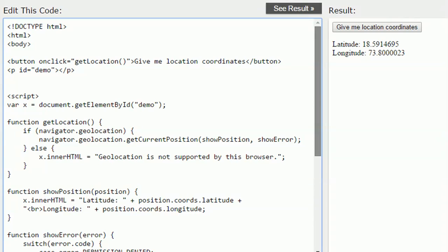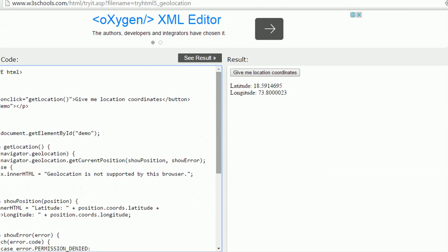Besides getCurrentPosition, HTML5JS also has another function called watchPosition which will help you to trace the device with time gap continuously.